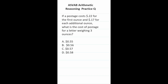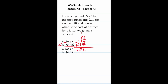This arithmetic reasoning practice test question says that postage costs 22 cents for the first ounce and 17 cents for each additional ounce. What is the cost of postage for a letter weighing three ounces? It costs 22 cents for the first ounce, then 17 cents for the second ounce, and 17 cents for the third ounce. Adding these up: 7 plus 7 plus 2 is 16, carry a 1 — so the total is 56 cents, which is answer B.